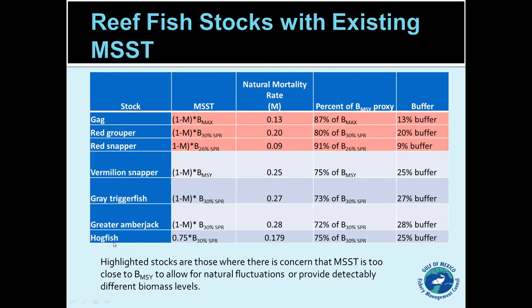The top three stocks — highlighted in red — are those for which the one-minus-M formula sets a buffer that's pretty close to the MSY level. We generally consider that if the buffer is less than 25%, we're getting too close to the MSY level and run into the problem of spurious overfished declarations or natural fluctuations exceeding that buffer.